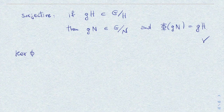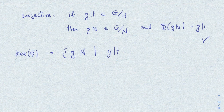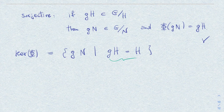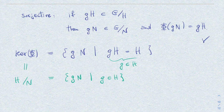Finally, we show the kernel is precisely H over N. By definition, the kernel is the set of cosets g·N such that φ(g·N) = g·H equals the identity coset H. This condition is equivalent to g being in H. Therefore the kernel equals the set of g·N with g in H, which is precisely the definition of H over N. This concludes the proof.